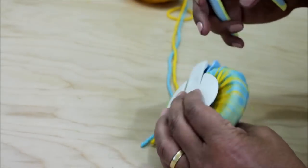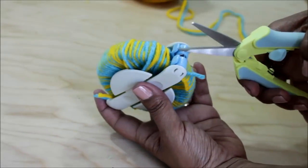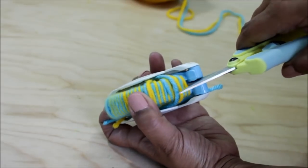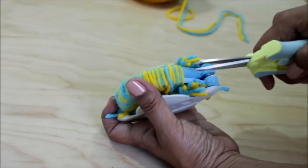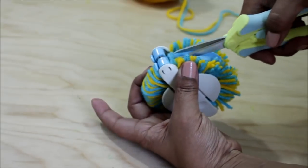Then you're gonna go to the middle portion right here, put your scissors, lay them right there and snip your yarn and keep going. You're going to go all the way around.